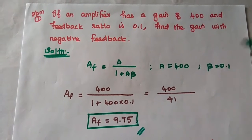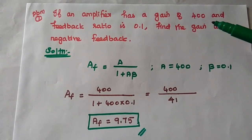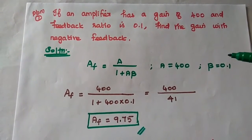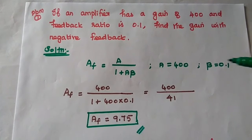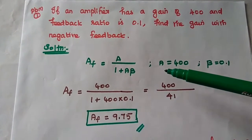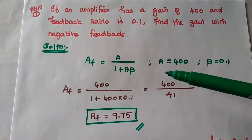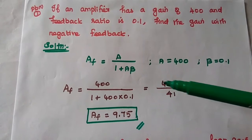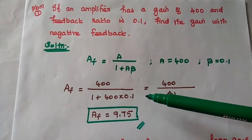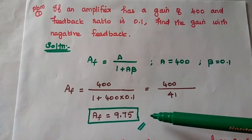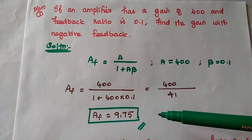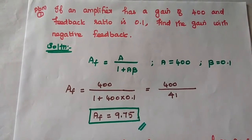In the problem, A is given as 400 and β is 0.1. Substituting these two values in the formula: 400 divided by (1 + 400 × 0.1), that is equal to 9.75. This is the answer.